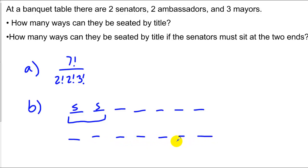In each case, though, you'll notice that because my senators are here and I can flip-flop them, and since we're talking by title, neither arrangement is different. In either of these cases, it really leaves me with only five ways to place the other people.